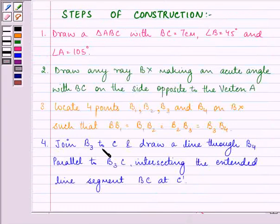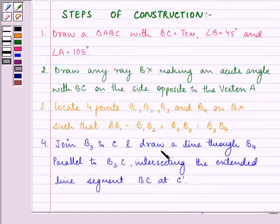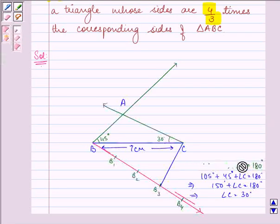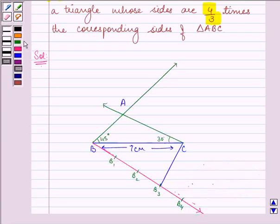Now next is to join B3 to C. Let us join B3 to C. And draw a line through B4 parallel to B3C intersecting the extended line segment BC at C dash. So let us erase this calculation first. What we need to do next is, first of all we need to draw a line through B3C through B4, which is intersecting the extended BC at C dash.